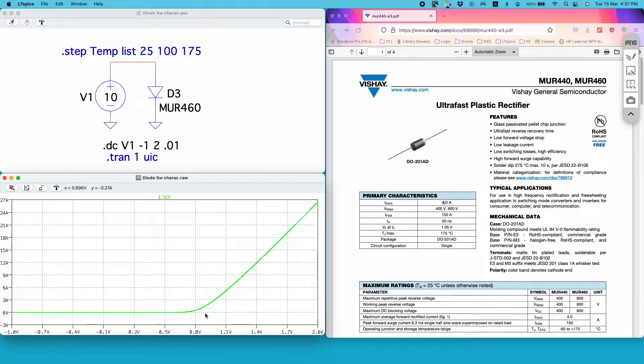If I run the simulation I get this green trace. You can see the current is 0 and remains 0 until V1 exceeds the forward voltage drop of the diode, which is approximately 0.8 volts for this particular diode.